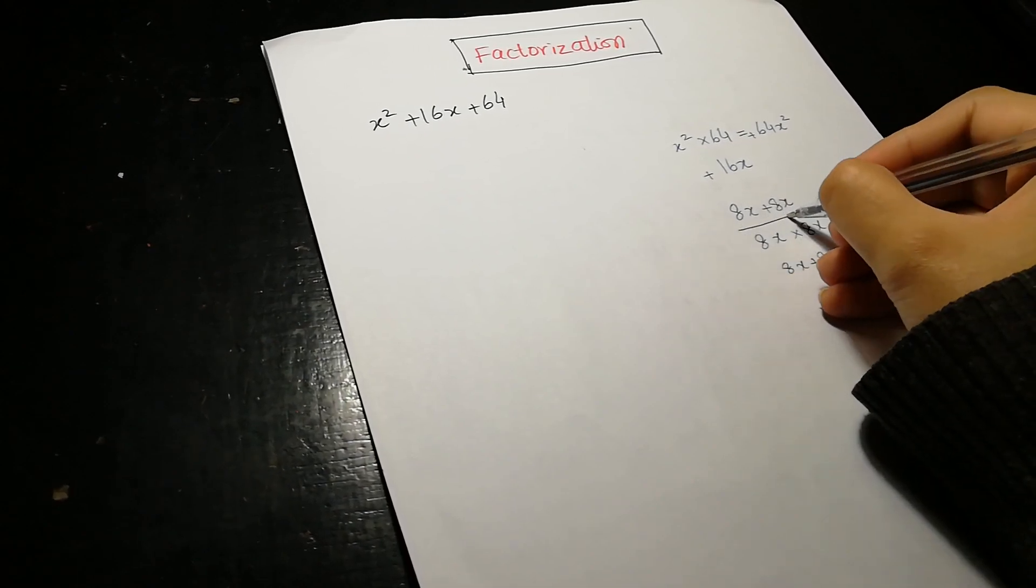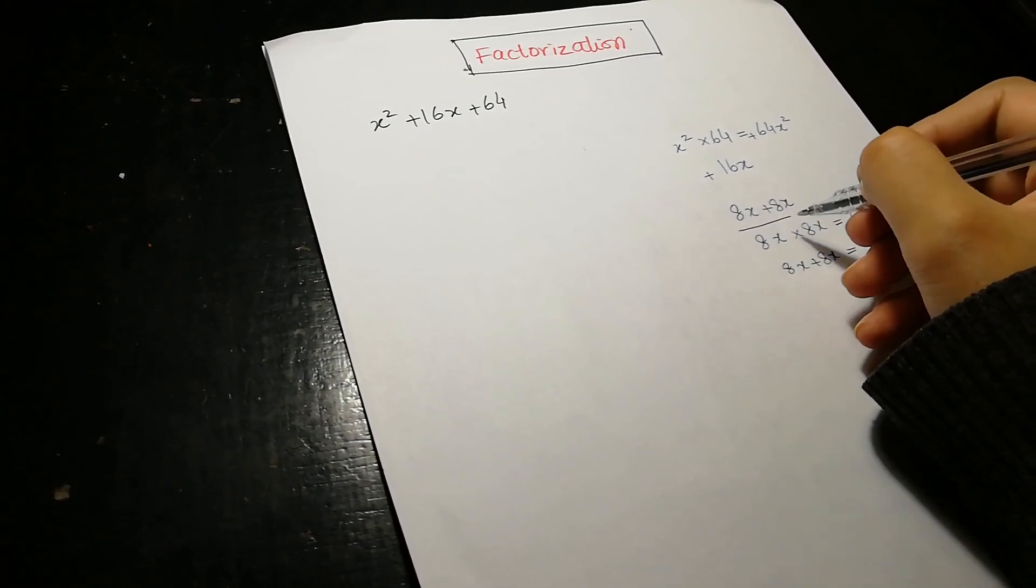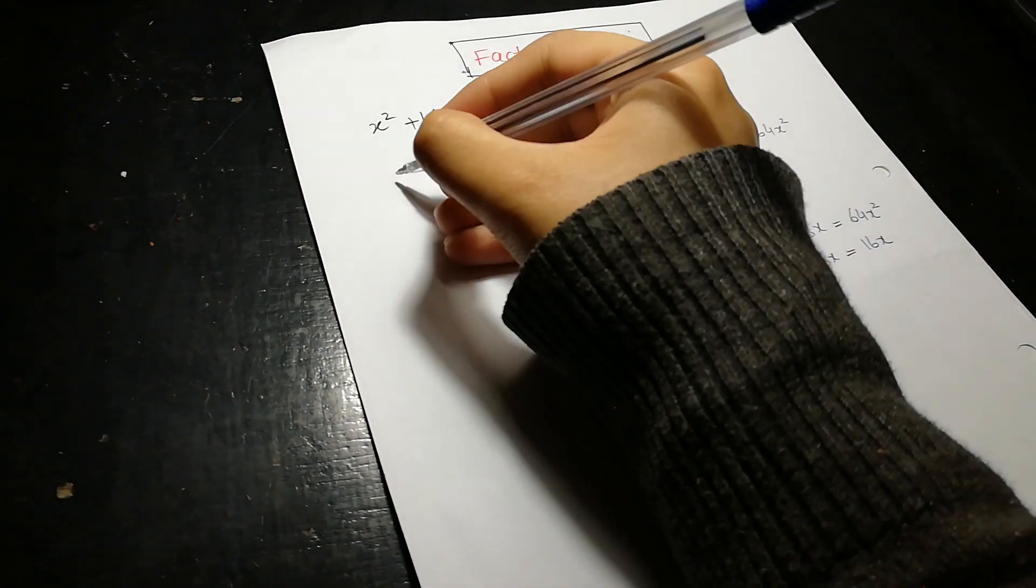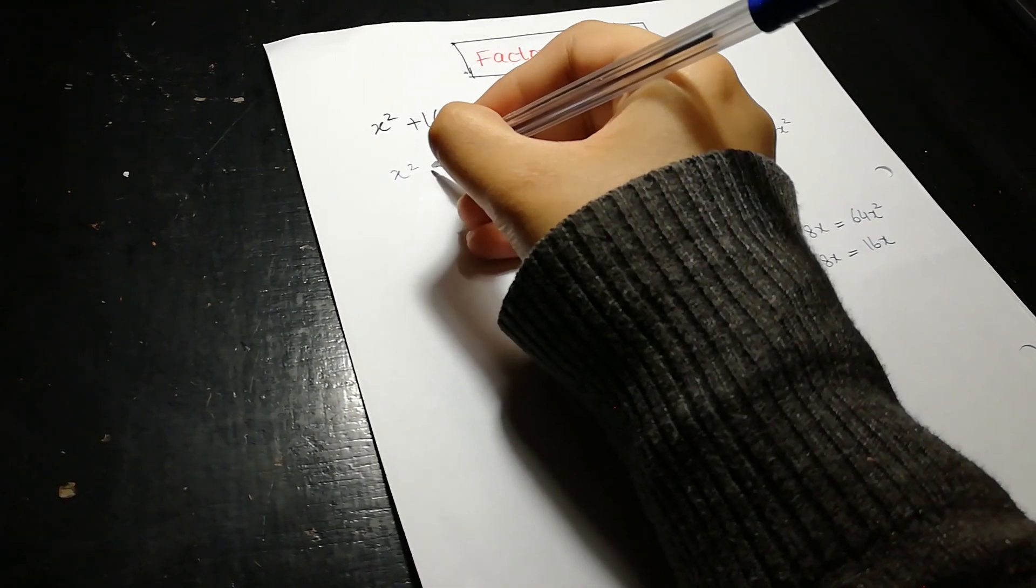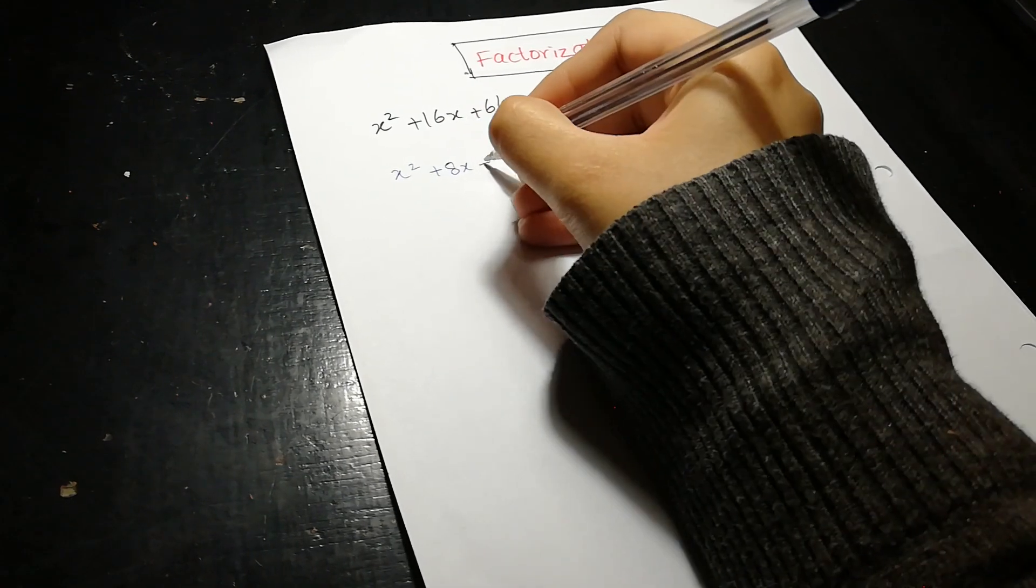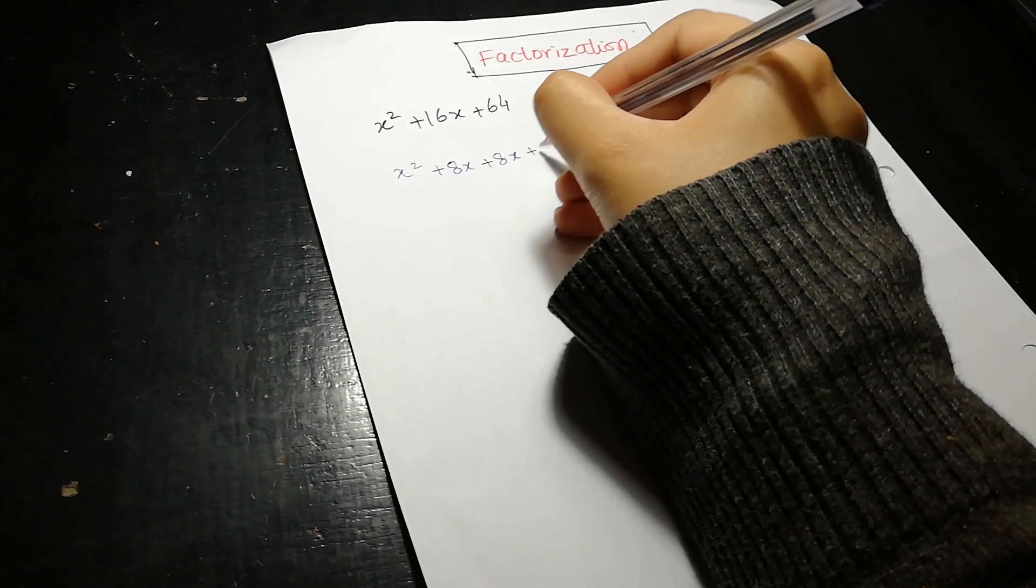So we write this 8x and 8x in the place of 16x. So x square plus 8x plus 8x plus 64.